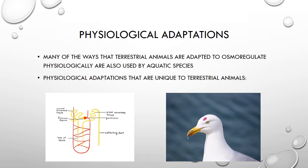One way that terrestrial animals adapt to regulate water levels is through physiological adaptations. Many of the ways that terrestrial animals are adapted to osmoregulate physiologically are also used by aquatic species. This includes the use of the kidneys, which are regulated by hormones including the antidiuretic hormone. One unique physiological adaptation is seen in the camel, which has been found to have longer loops of Henle so that more water can be reabsorbed into the bloodstream.